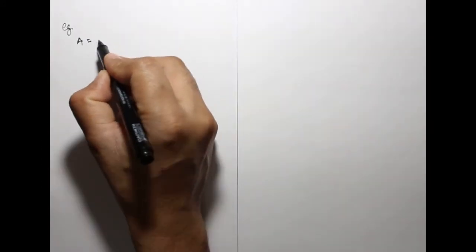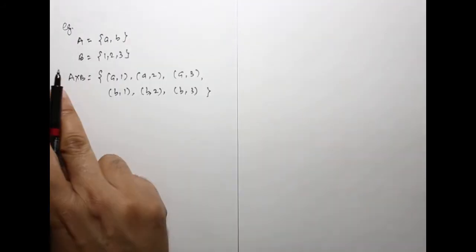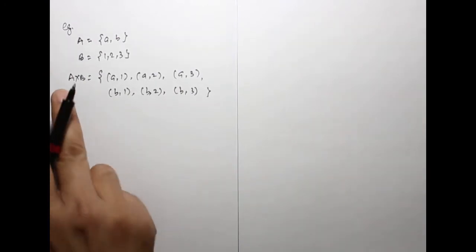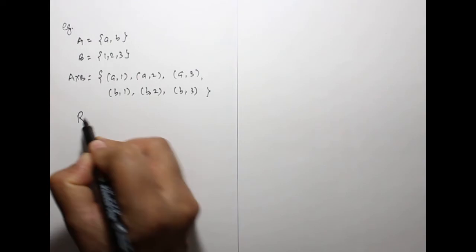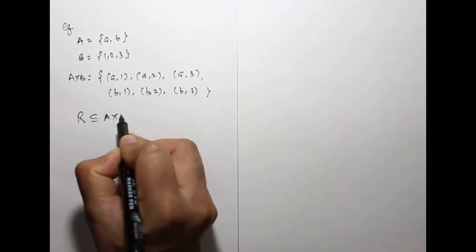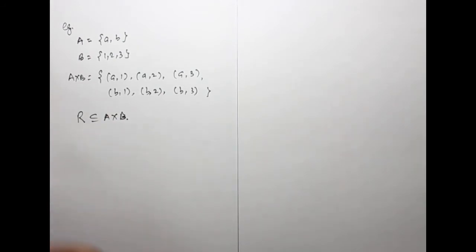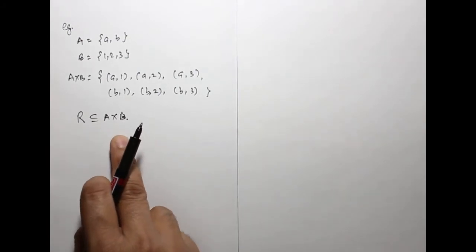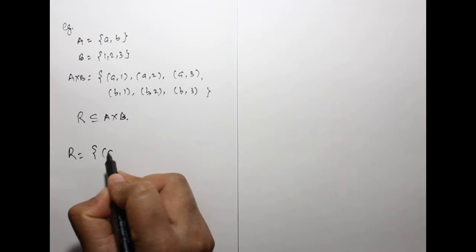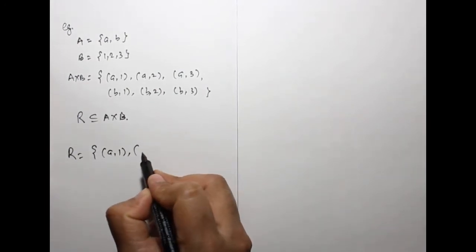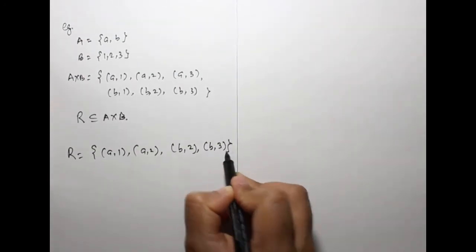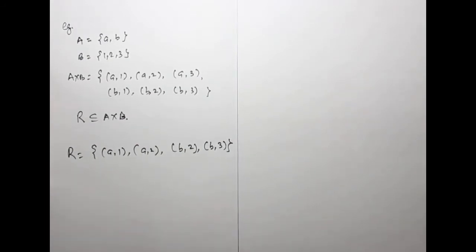Example: for a relation, let A equals {a, b} and B equals {1, 2, 3}. This is the Cartesian product of A cross B. A relation is any subset of A cross B. For example, R equals {(a,1), (a,2), (b,2), (b,3)}. This is a relation because it is a subset of A cross B.